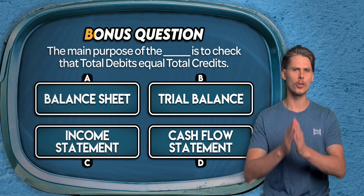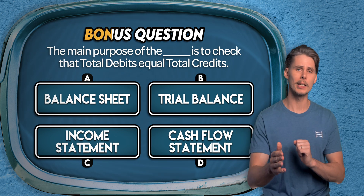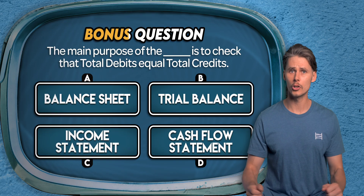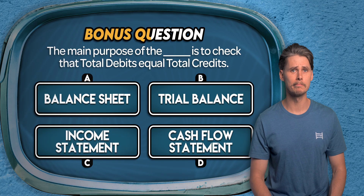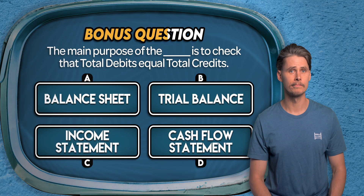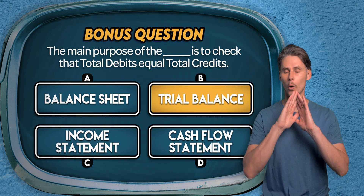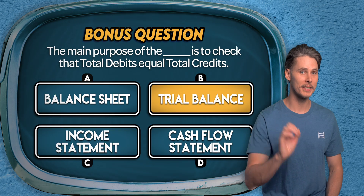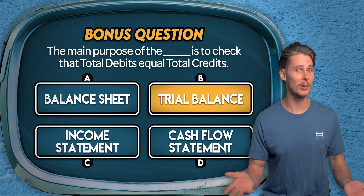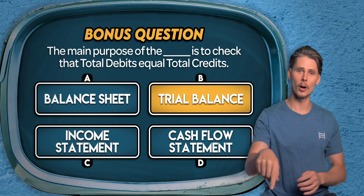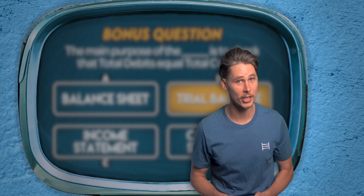Bonus question. The main purpose of which report is to check that total debits equal total credits? Is it the balance sheet, the trial balance, the income statement, or the cash flow statement? The answer is B — the trial balance. It shows the balances of all accounts in the general ledger at a point in time and helps us check that total debits equal total credits. Don't forget to share your score in the comments. Subscribe for more accounting quizzes and tutorials — I'll see you next time.